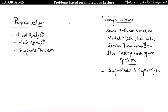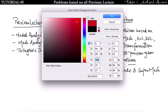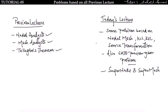Hi guys, in the previous lecture we have seen the concept of nodal analysis, mesh analysis, and Tellegen's theorem. In this lecture we will be discussing some problems based on nodal, mesh, KCL, KVL, and source transformation — whatever we have studied till now. We will also look at the concept of super node and super mesh.